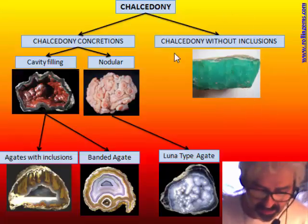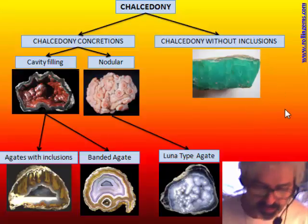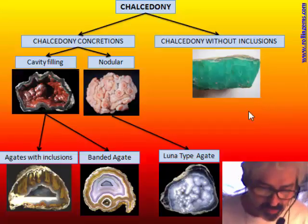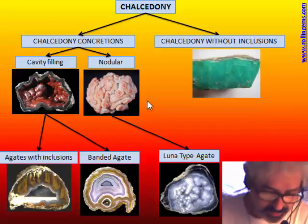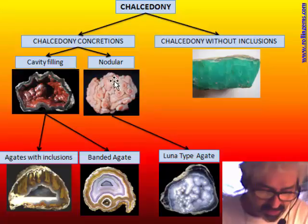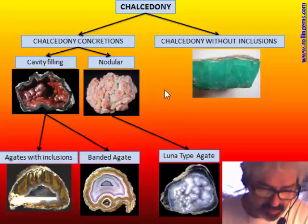The vein type is the real chalcedony used in gemology, like chrysoprase, blue chalcedony, purple chalcedony, etc. The group of concretions can be divided into two types based on the way the concretions grow.